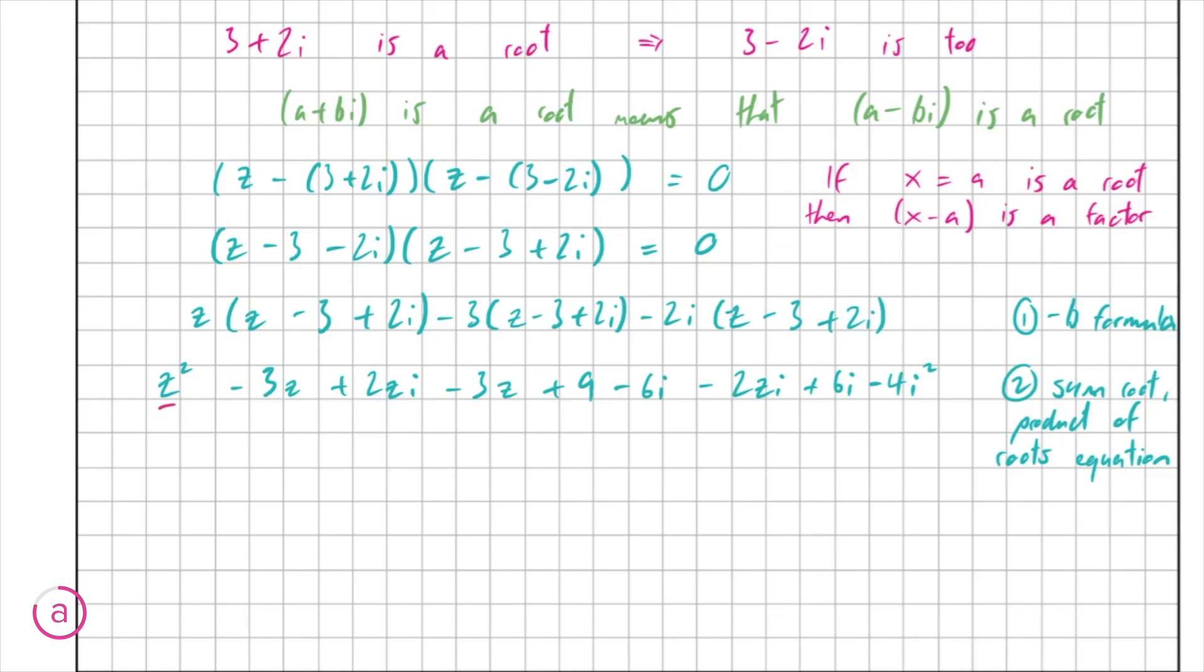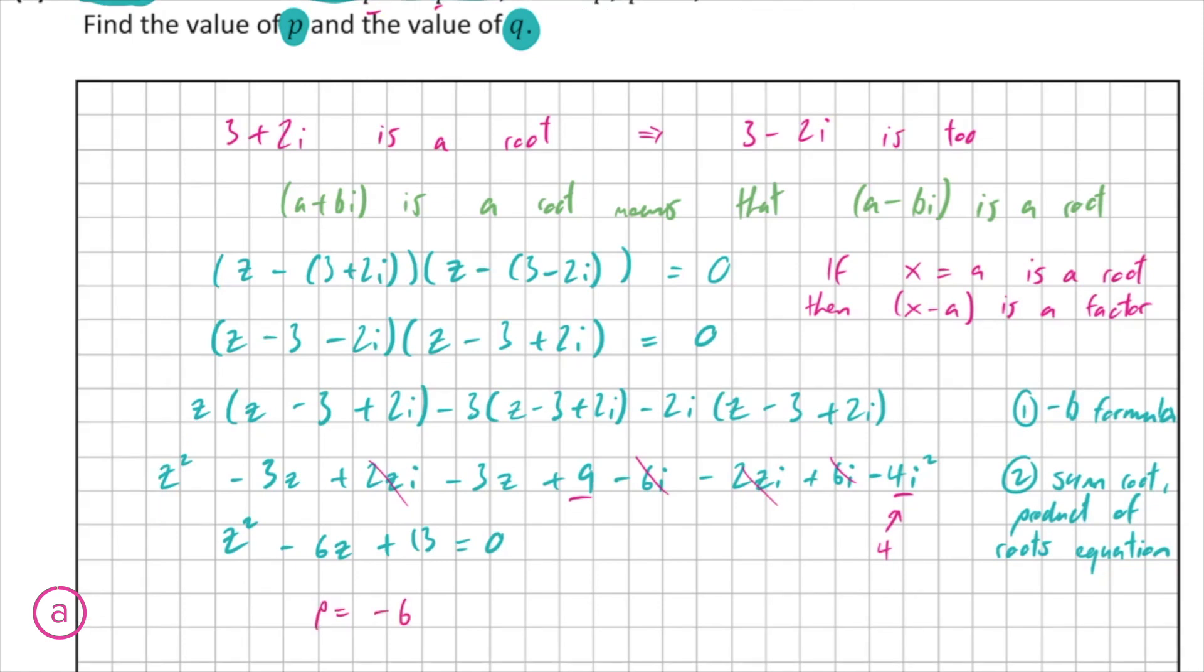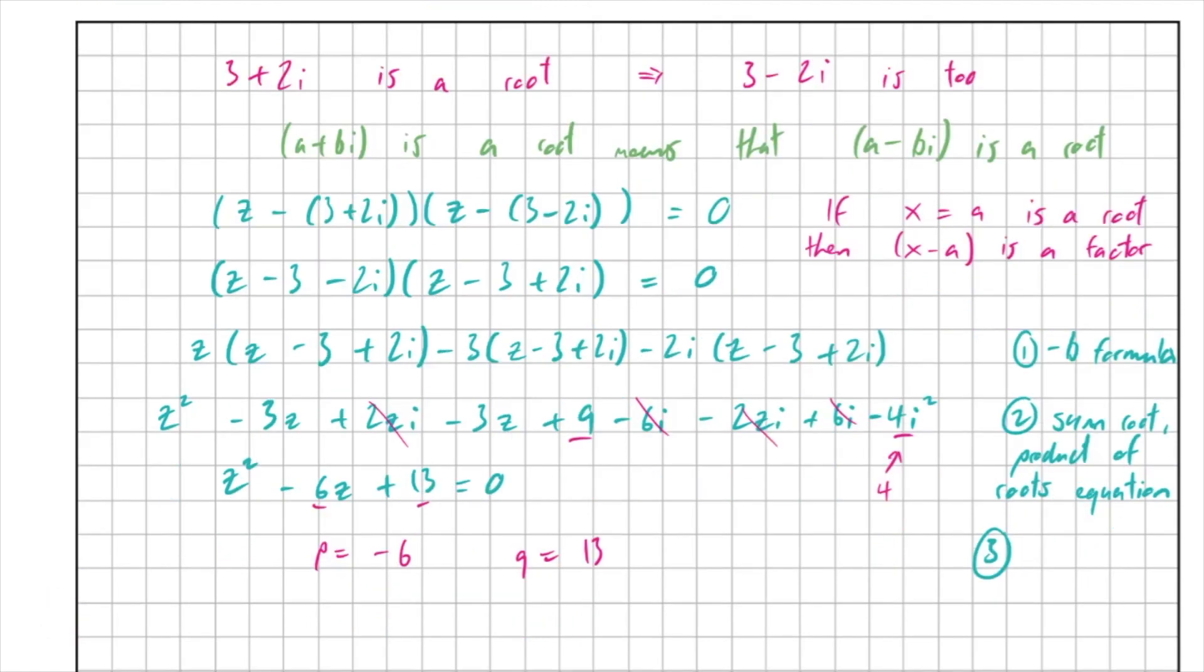So z squared is the only z squared involved, so we're just going to write that out again. We have minus 3z minus 3z again, which will give us minus 6z. We have a plus 2zi and a minus 2zi, so those terms are just going to cancel out. We also have a minus 6i and a plus 6i, so those will also cancel. And lastly, we have a plus 9 and a minus 4i squared. And we know minus 4i squared is equal to minus 4 times minus 1, because i squared is equal to minus 1, and therefore minus 4i squared is just equal to 4. So therefore we have 9 plus 4, which will give us plus 13, and that's all equal to 0 as well. But we know the coefficient of z is p, and we know the constant is q. So therefore we know p is equal to minus 6, which is the coefficient of z, and q is equal to 13, because that's the constant.